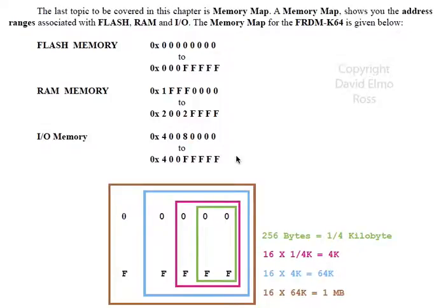Now one of the more important concepts is memory map. A memory map shows you where your flash, RAM, and I/O exist in the memory space of your microcontroller. The 32-bit one that we have has actually a total of four gigabytes of total space, but it doesn't use up all of that.